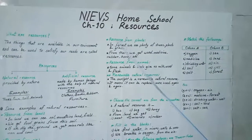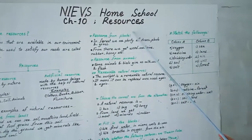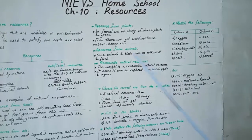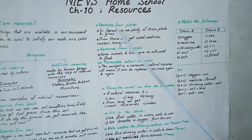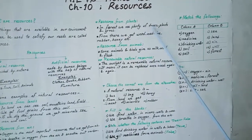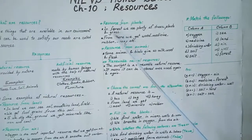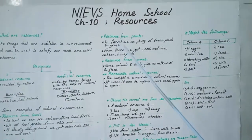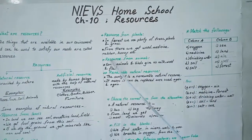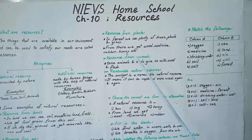We practice resource from plants. Where we get plants? In forest, we see plenty of trees, plants and grass. From the forest, we get wood, medicine, rubber, honey, etc.